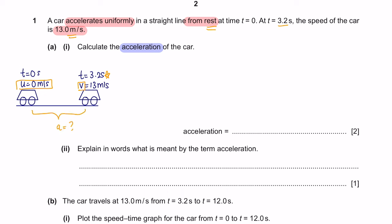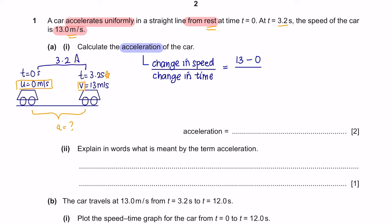The formula for acceleration is change in speed over change in time. So the change in speed is the final velocity of 13 meters per second minus the initial velocity of 0, over the time period of 3.2 seconds. This gives you 4.1 meters per second squared. Always leave your answers in two significant figures and do not forget to write your units.